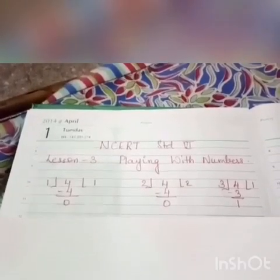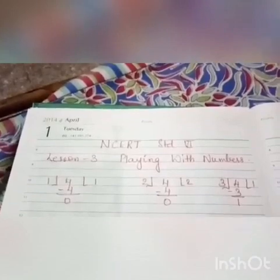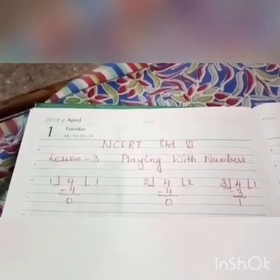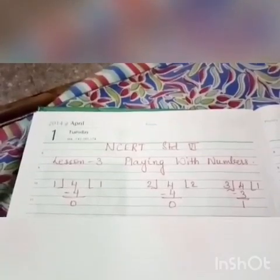Children, you can see that 4 when divided by 1, we get 0 as the remainder. 4 when divided by 2, again we get 0 as the remainder.